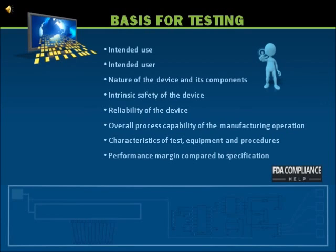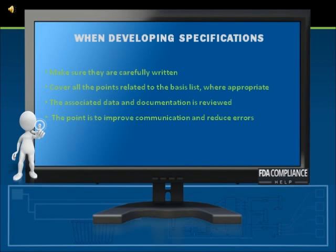These decisions are typically based on intended use, intended user, nature of the device and its components, intrinsic safety of the device, device reliability, overall process capability of the manufacturing operation, characteristics of test and inspection equipment and procedures, and performance margin of the device compared to the device specification. Device test and inspection specifications, as well as test and inspection procedures, should be carefully written and shall cover all appropriate points in order to improve communication and reduce errors.